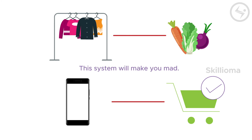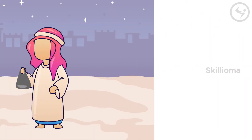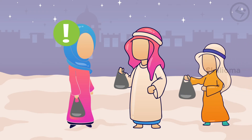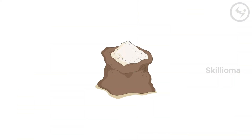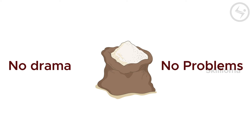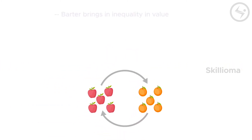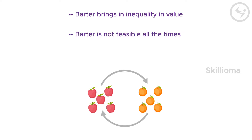If there is one thing we know, it's that this system will make you mad. What if the person you're trading with doesn't even want the item you are offering? What if he strikes a barter with some third person instead? You are left hanging — both stuck, broke, and deprived of what you need. This is why money is so important. Barter never worked out and never will. The barter scenario shows us: number one, barter brings inequality in value; number two, barter is not feasible all the time; number three, barter is an irrational form of trade.